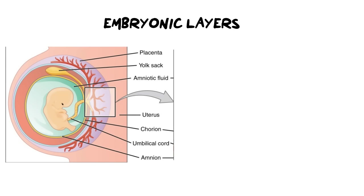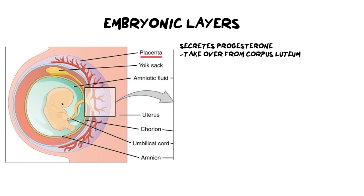Let's get into the first set of embryonic layers, starting with the placenta — a very important structure. It's a temporary organ that only grows during pregnancy. It's the connector between the mother and the developing embryo, and it plays a really important role in secreting progesterone, taking over from the corpus luteum. You'll remember from our menstrual cycle video that the corpus luteum secretes progesterone.